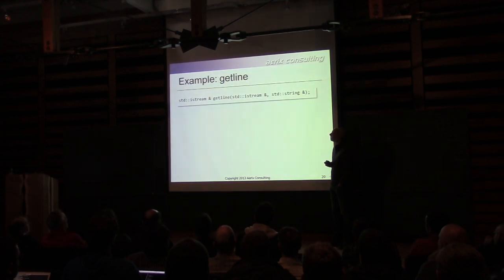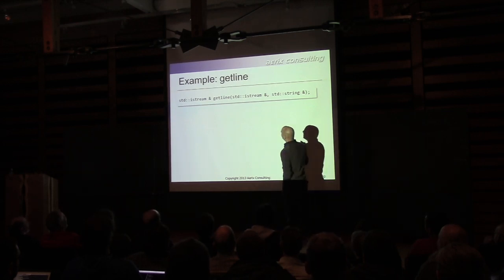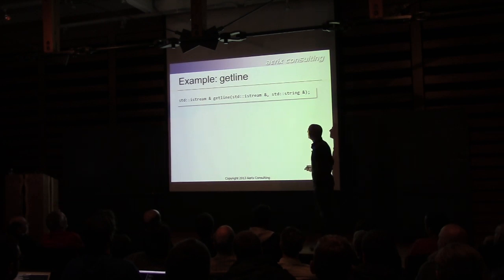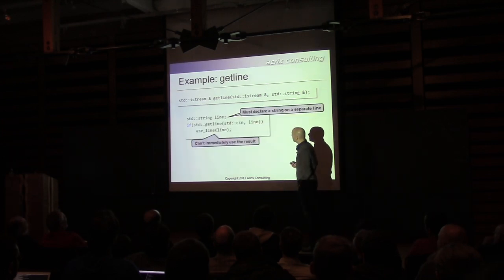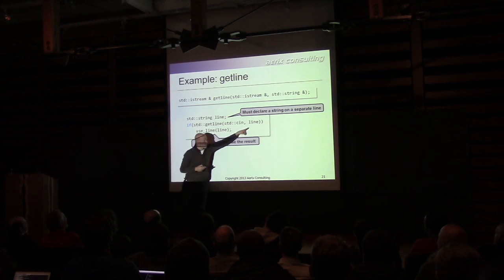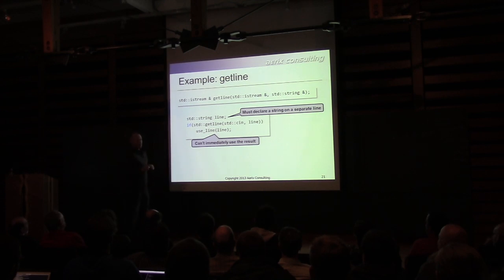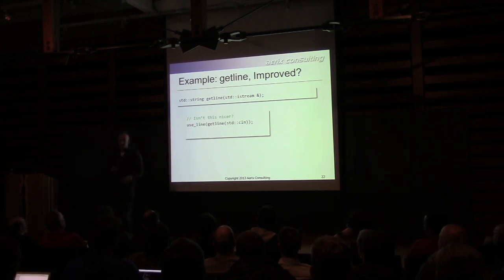Let's talk about getline — the favorite whipping boy. You pass in a stream and an out parameter: a reference to a std::string that you then fill in. How come getline doesn't return a line? There are reasons. You're supposed to default-construct a string and pass it into getline by non-const reference, then use the line. You can't immediately use the result — it's an awkward, annoying, non-composable interface. Wouldn't it be great if getline just returned a line?